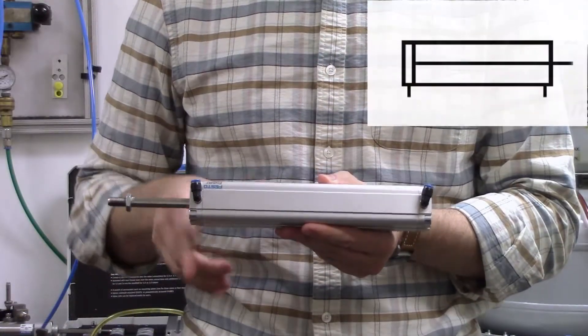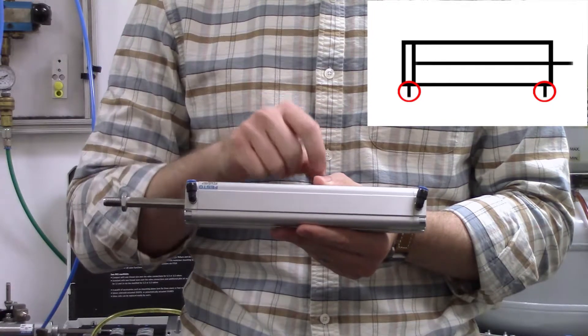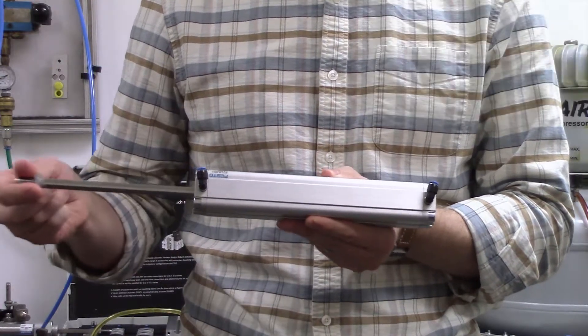Double-acting cylinders have two ports, each of which can serve as an intake or an exhaust for air, depending on which direction the piston is moving.